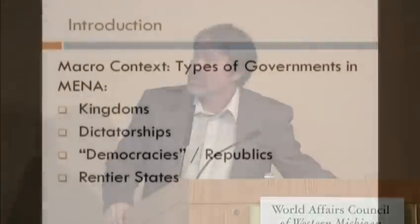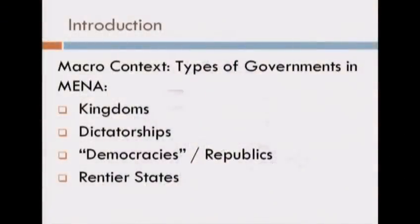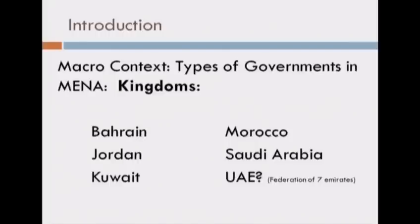Let's do a quick introductory item and talk about the different kinds of governments in the Middle East and North Africa. As a political science nerd, this is important. What kind of governments do they have? They have kingdoms, dictatorships, democracy/republics, and rentier states. Kingdoms: Bahrain, Jordan, Kuwait, Morocco, Saudi Arabia, United Arab Emirates — at least six kingdoms. Think about relationships that strong states have with these six states: Bahrain, Jordan, Kuwait, Morocco, Saudi Arabia, UAE.